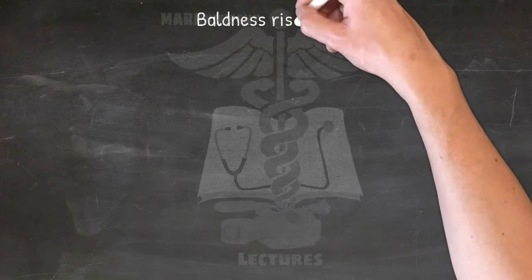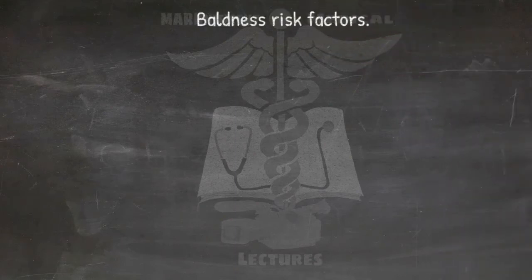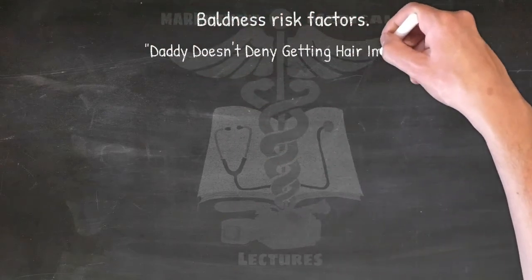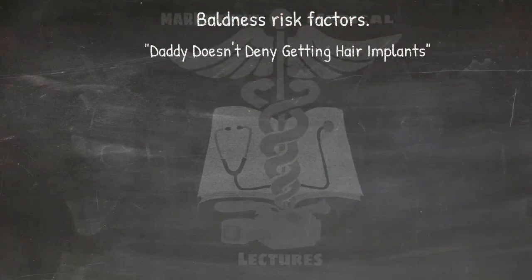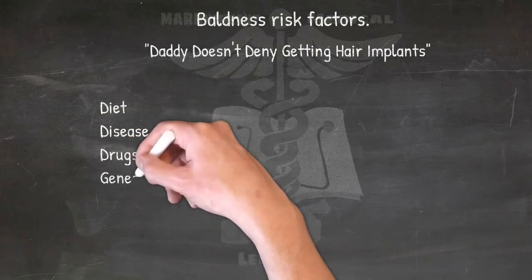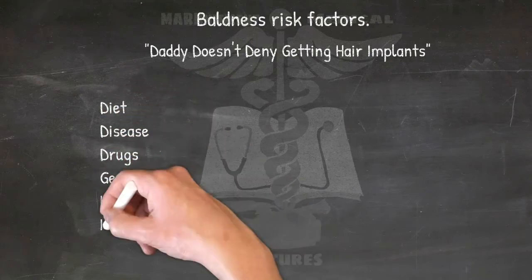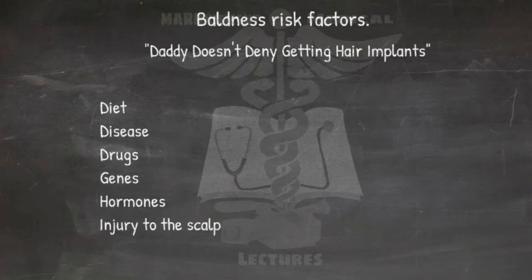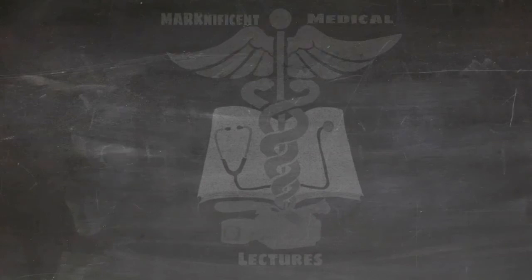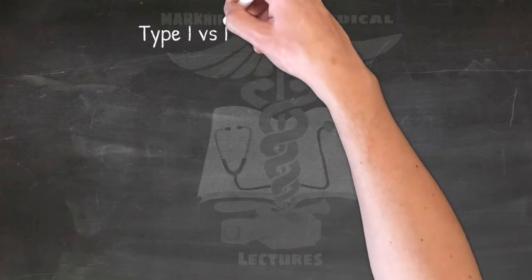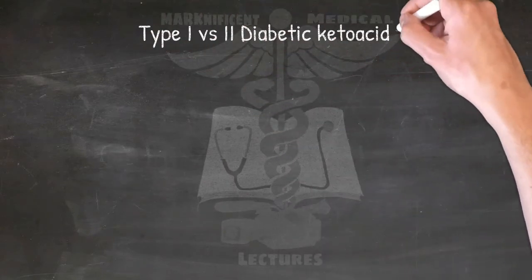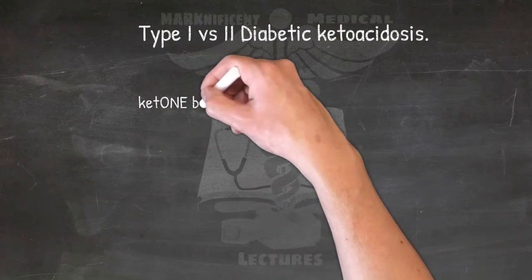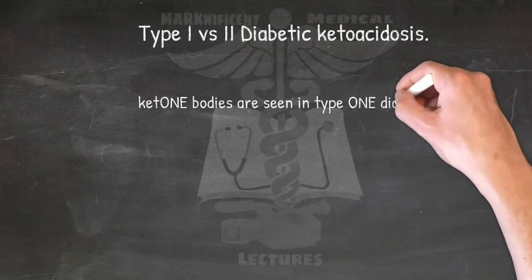Baldness risk factors: DADDY DOESN'T DENY GETTING HAIR IMPLANTS — Diet, Disease, Drugs, Genes, Hormones, and Injury to the scalp. Type 1 versus type 2: diabetic ketoacidosis — ketone bodies are seen in type 1 diabetes.